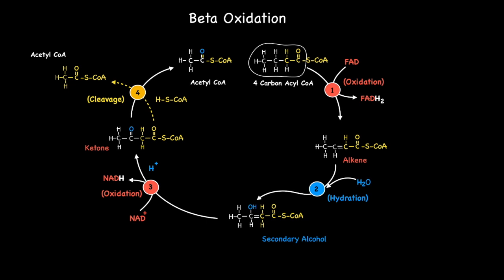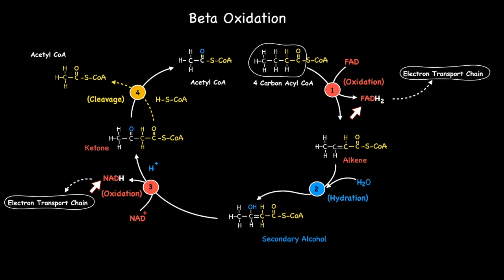Each single beta-oxidation cycle leads to the production of one reduced coenzyme FADH2 and one reduced coenzyme NADH at steps 1 and 3. Each of these coenzymes links to the electron transport chain, where they offload their high energy electrons and hydrogens accepted at steps 1 and 3, and then return back in the form of FAD and NAD+, to repeat the process again.